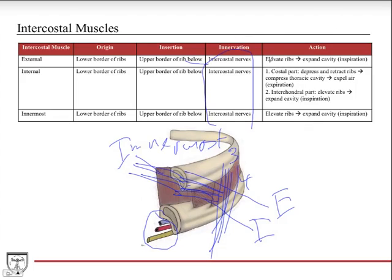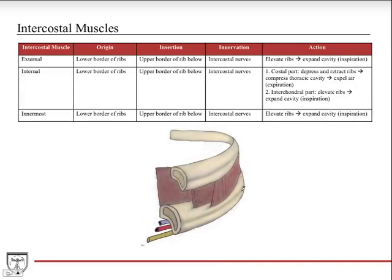The function differs based on fiber orientation. The external intercostals elevate the ribs, helping expand the thoracic cavity — increasing volume and decreasing pressure to move air in. This is more involved during active inspiration. The way the fibers are oriented, when they contract they pull the rib cage in a way that helps open things up.